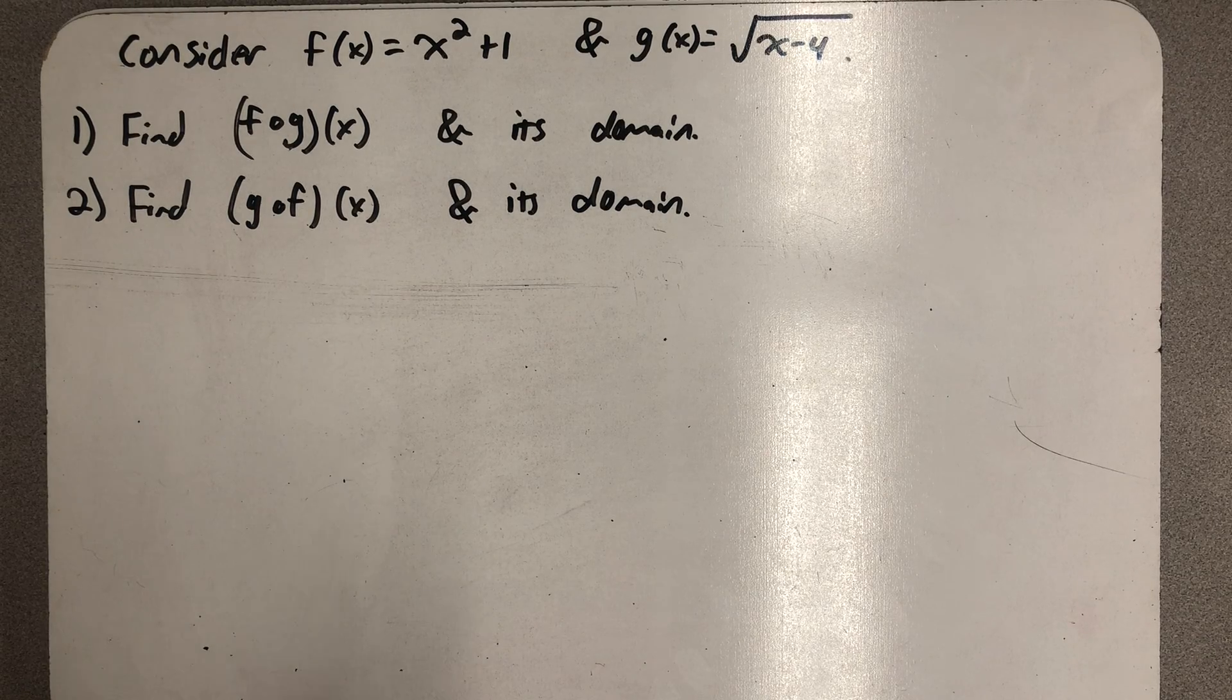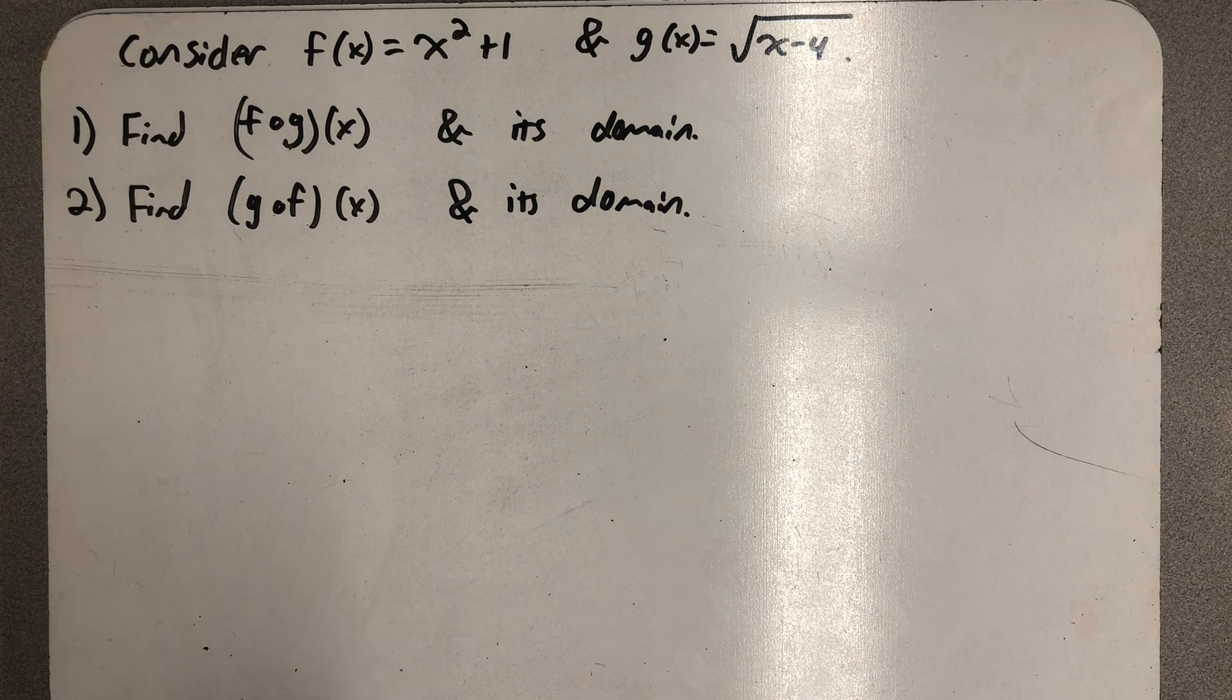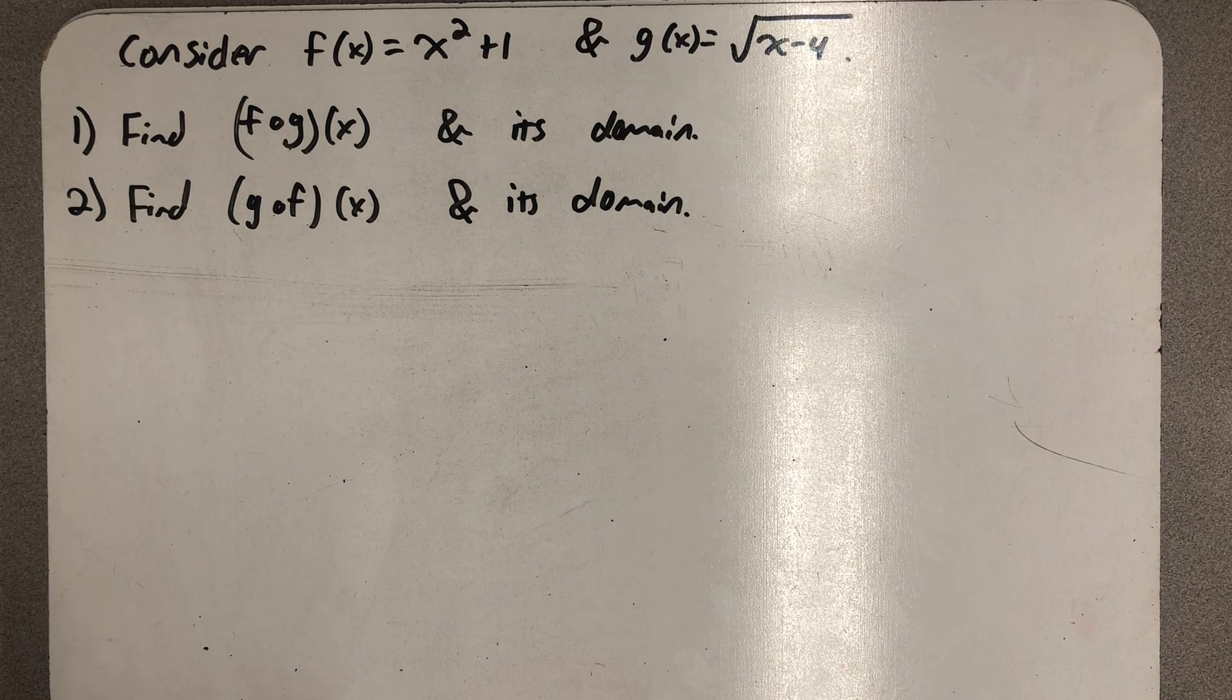We've been given two functions: f of x equals x squared plus 1 and g of x equals the square root of x minus 4.